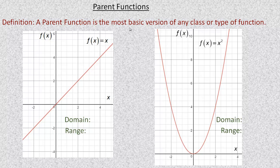A parent function is the most basic version of any class or type of function. This one on the left is called the linear function, and the most basic version is f(x) = x, or y = x. Remember, y and f(x) are the same thing. We're also talking about domain and range — the values the function is defined for, or the values the dependent variable can accept.